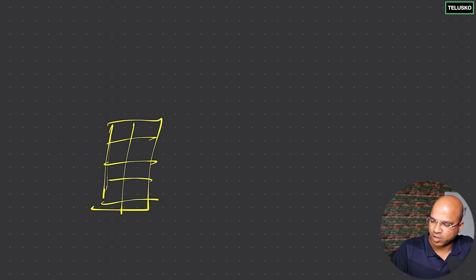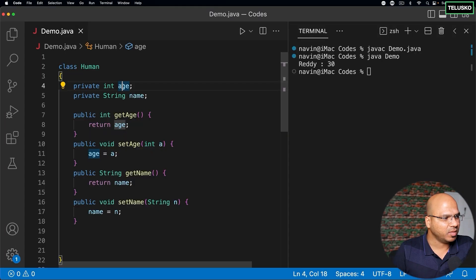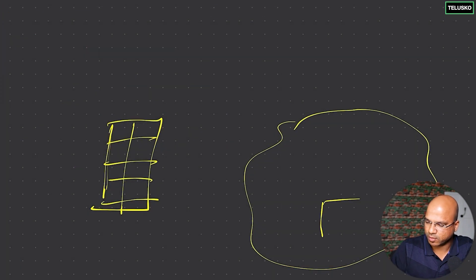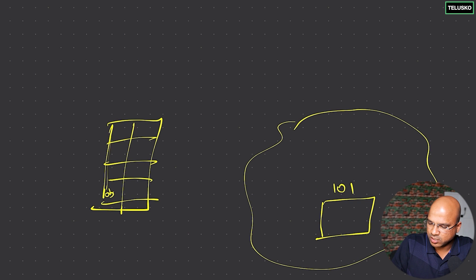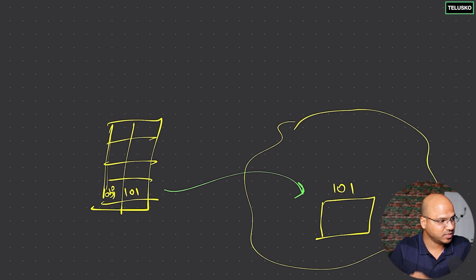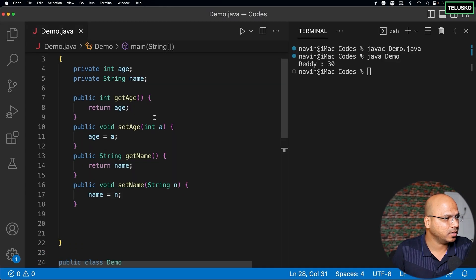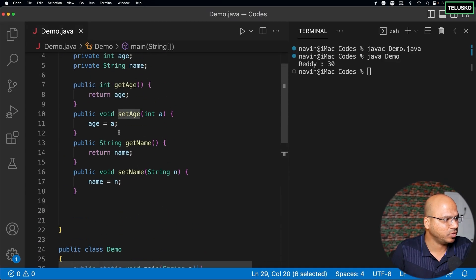If you want to understand that with a diagram — we have a stack memory. We've talked about stack and heap, so we have a stack here and a heap here. The moment you create the human object, we get this object in the heap. It will have some address, let's say 101. So we have 'obj' with address 101 — that's the first object. Now in my main stack we are executing the 'setAge' method.